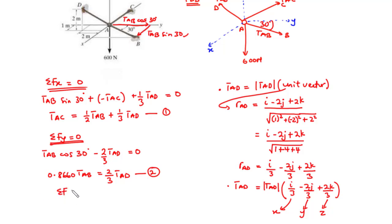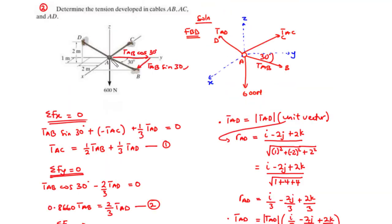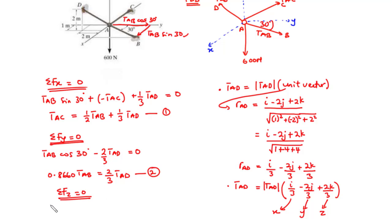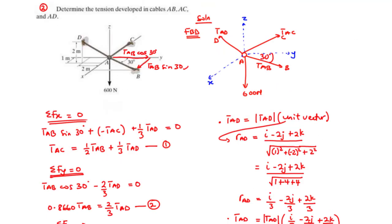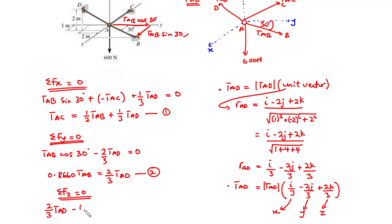Lastly, we have the sum of FZ equals 0, focusing on the Z components. TAB lies in the XY plane so it has no Z component. TAC has no Z component. TAD has a Z component of (2/3)·TAD. The 600 Newton force is directed along the negative Z axis, so it becomes (2/3)·TAD − 600 = 0. We call this Equation 3.